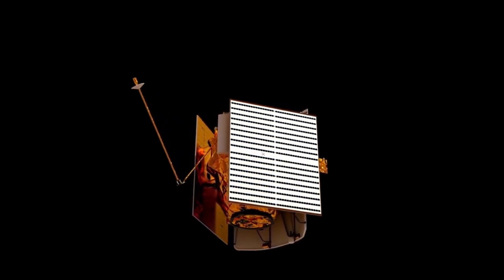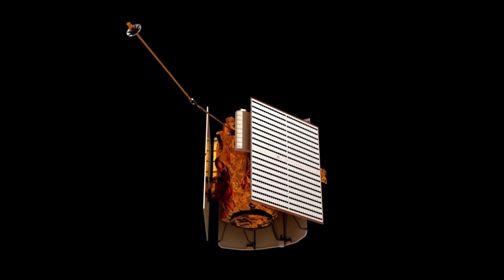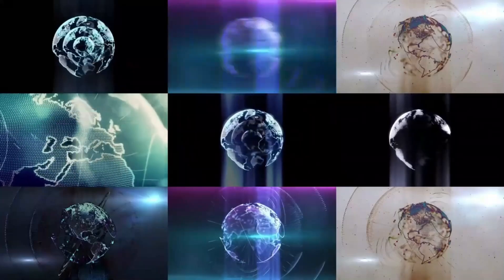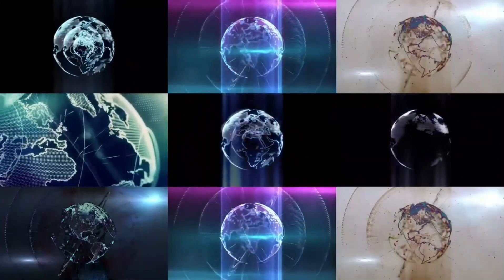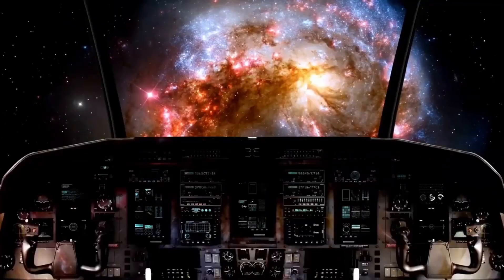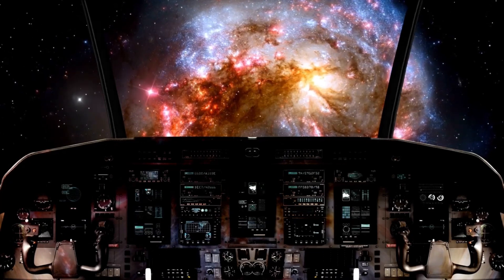These planets, situated in what scientists call the habitable zone of their respective stars, have conditions that may be even better for life than those found on Earth. This is a mind-boggling concept, as Earth is traditionally seen as the perfect planet for life. Kaku challenges this notion by suggesting that there could be planets out there with even more ideal conditions for supporting life.